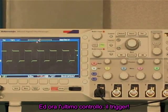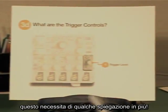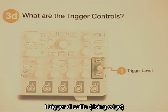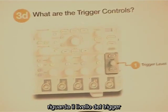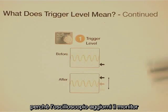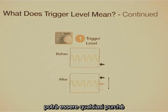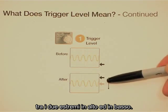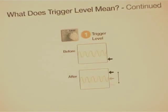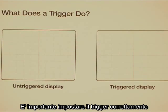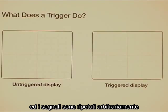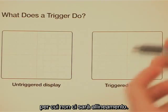And now for the last set of controls: the trigger. Modern scopes have really sophisticated triggering systems, but we're just going to talk about the bread and butter of triggering today — the rising edge trigger. With the rising edge trigger, you care mainly about the trigger level: the voltage that your signal has to cross through for the scope to consider it time to update the display. You want your trigger level to be somewhere between the top and bottom of your waveform. Without triggering, your scope just updates its data at arbitrary times, and your signal is repeating at arbitrary times, and those probably won't line up.